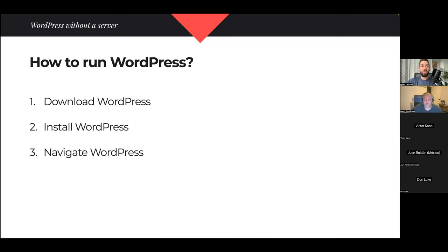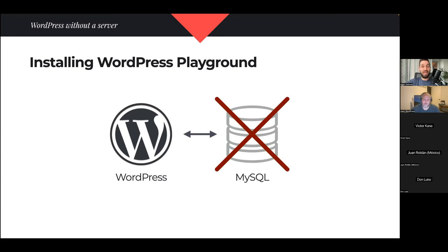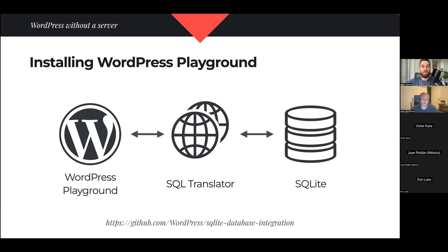Now for WordPress without a server. Normally to run WordPress you download it, install it, then open it in a browser. Downloading WordPress — solved: you go to wordpress.org, click download, get a zip bundle, and the browser can do the same using the Fetch API. Installing WordPress is more interesting: classically you need a MySQL server. During installation, WordPress asks for database credentials. In the browser we don't have MySQL, so instead we use a database called SQLite. There's a SQL translation layer between WordPress and SQLite — an official plugin you can download for any WordPress project — and in WordPress Playground we pre-install it.